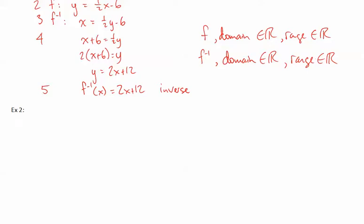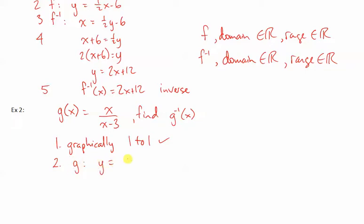Example 2. I'm going to give you a g(x) function, and it is x over (x minus 3), and we want to find g inverse. So, step 1, if we look graphically at this on the graphing calculator, or make some points and plot them, we recognize that it's one to one, so the inverse is capable of being a function. Number 2, we rewrite g as y, x over (x minus 3).